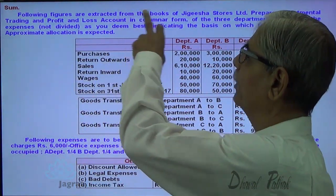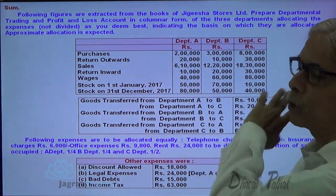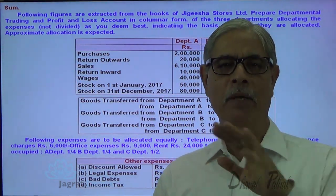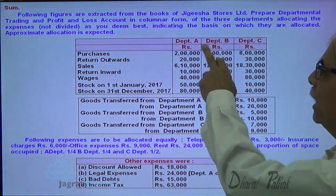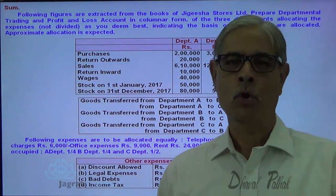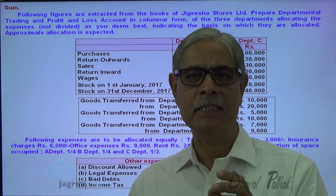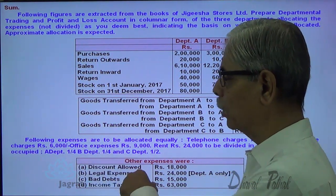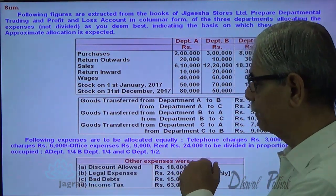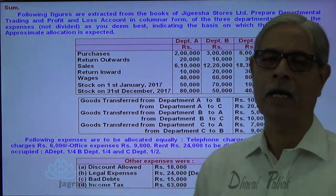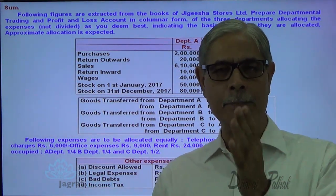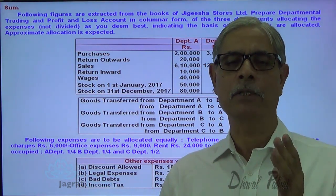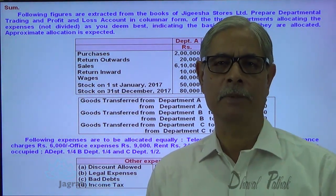The following figures are extracted from the book of Jigisha Stores Ltd — one store with common ownership and a common roof. There are three departments A, B and C. All three departments are allocated space for their operation. Department A is given one-fourth space, B is given one-fourth space, and C is given one-half space. So 50% of the space under the common roof is given to C, 25% to department A, and 25% to department B.